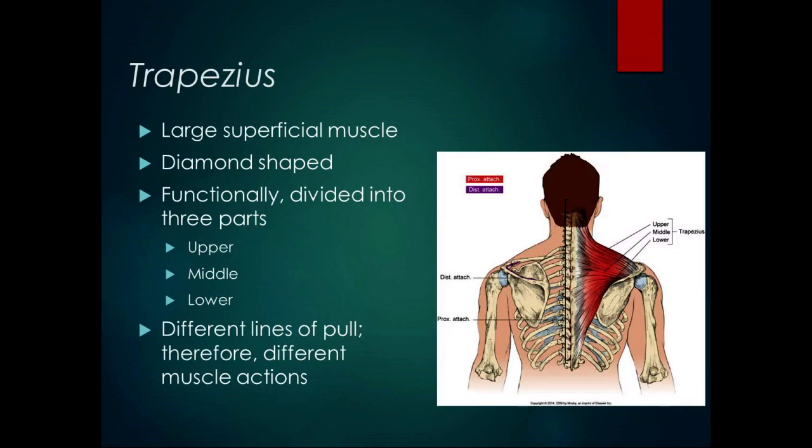The trapezius is the largest, most superficial muscle on the upper part of our posterior torso. It's diamond shaped and functionally divided into three parts. You can look at the fiber directions and see three different lines of pull, therefore different muscle actions. That's the differentiation between the upper, middle, and lower trapezius — the fiber directions.